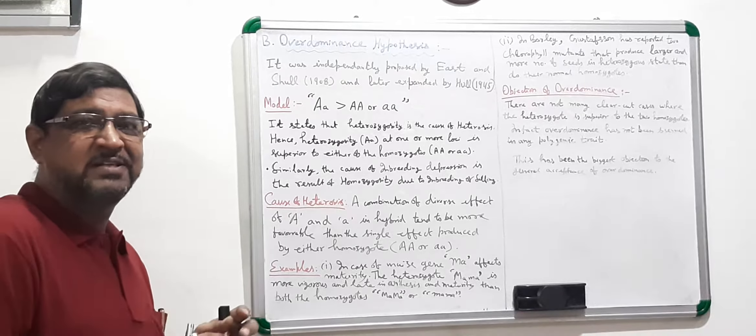This is the cause of heterosis because of the Over Dominance Hypothesis. However, if you look at the examples, you are not getting many clear cases. So you cannot confidently say that Over Dominance is applicable to all cases of heterosis, because there are no examples of heterosis in polygenic traits due to this Over Dominance.